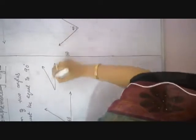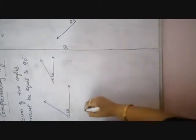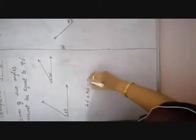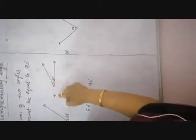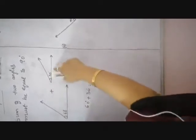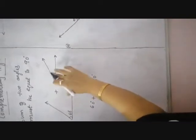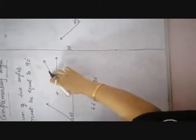For example, if one angle is 60 degrees and one angle is 30 degrees, are this pair of angles complementary? Yes. Why? Because 60 degrees plus 30 degrees is equal to 90 degrees. When the sum of two angles equals 90 degrees, then that pair of angles is nothing but complementary angles.